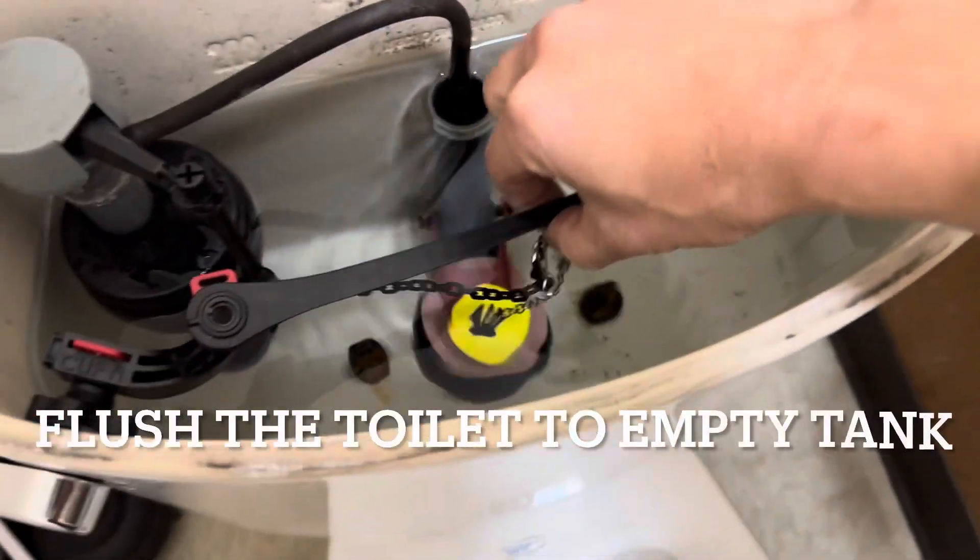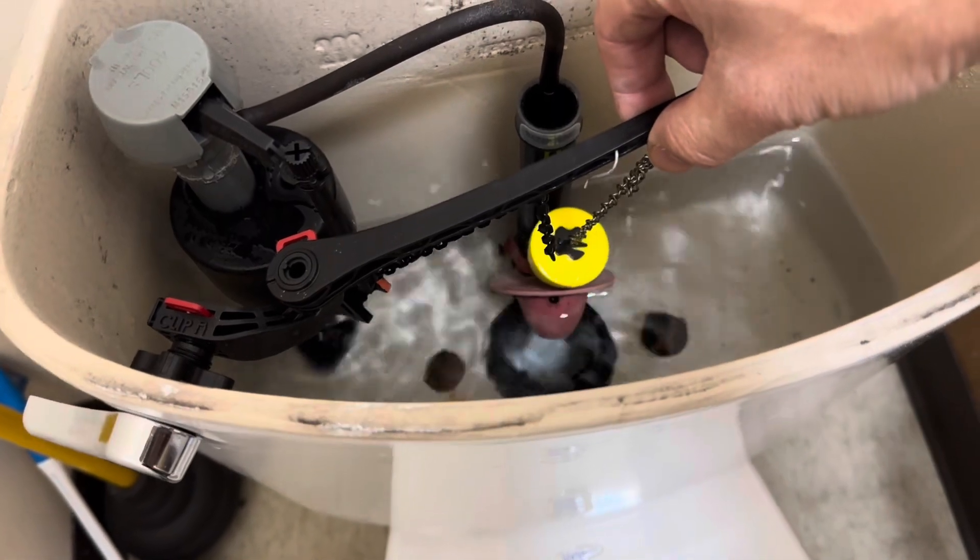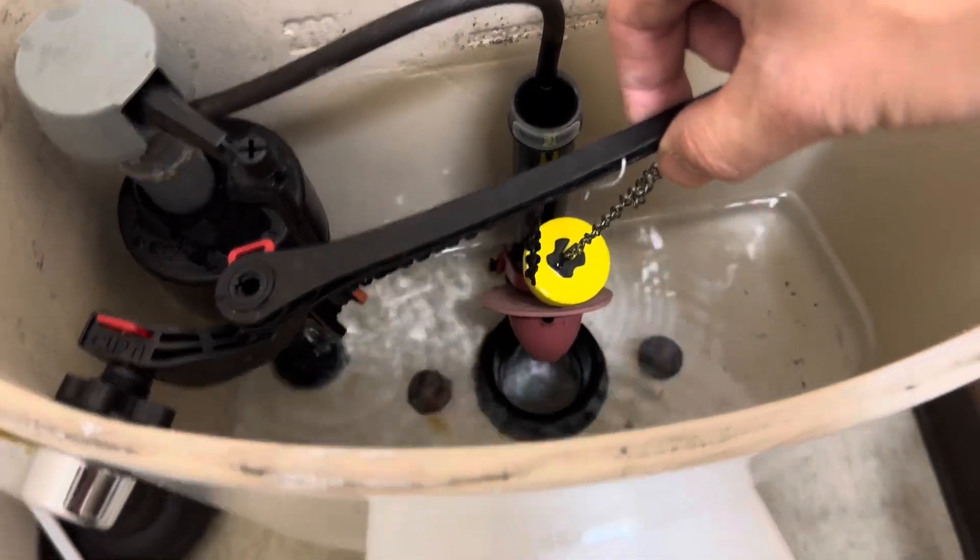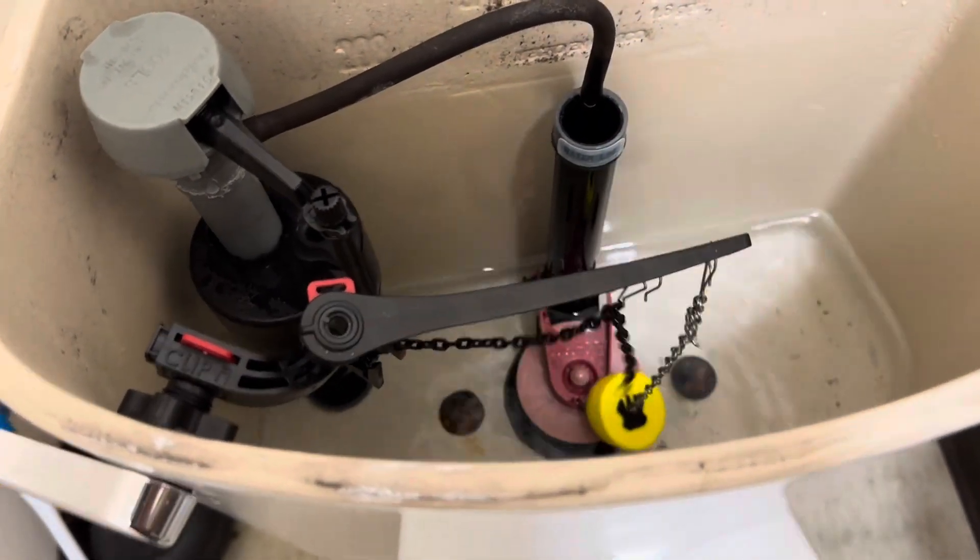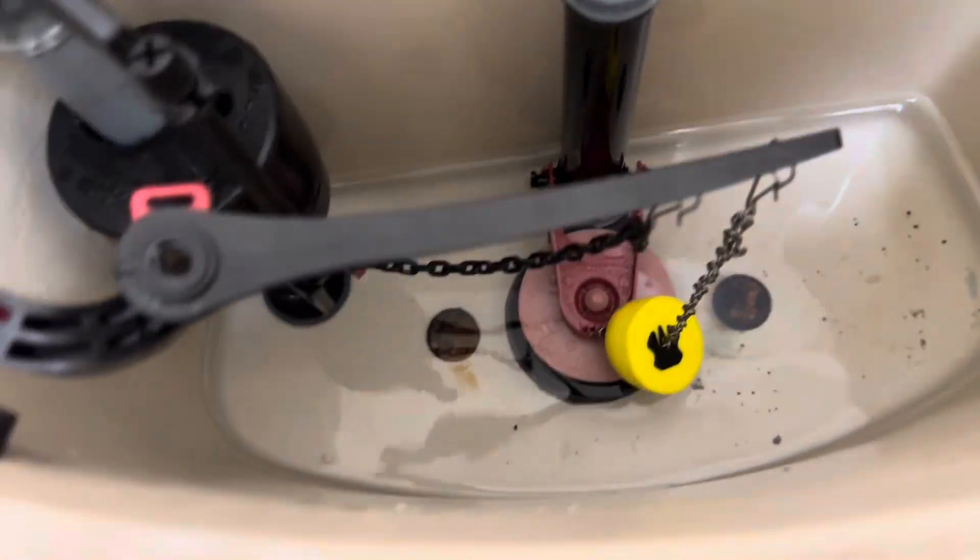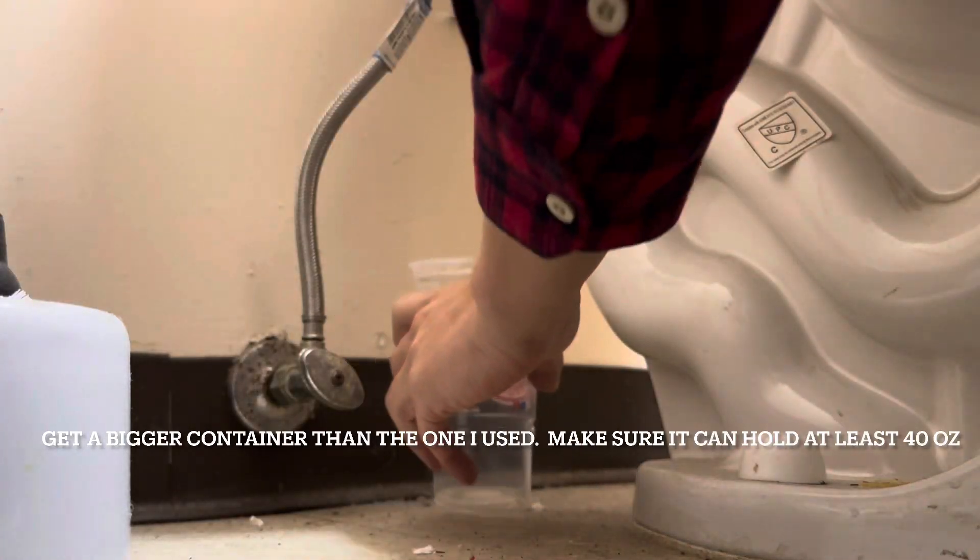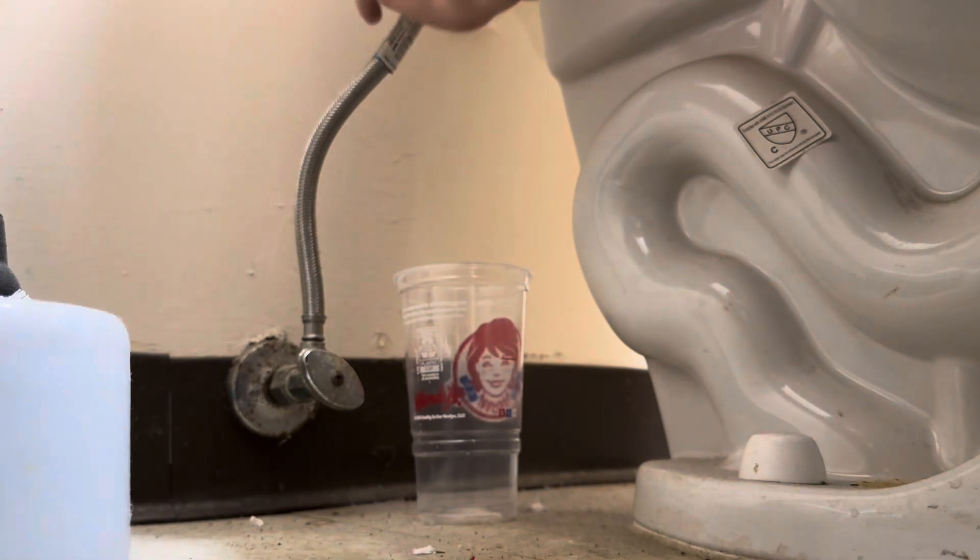Flush it, we want to empty out the water. Okay, so there's still a little bit of water in there. We'll have to undo this and then catch it with a cup. Make sure you get a bigger cup than the one I used. This was definitely too small, so you need probably at least half a gallon.